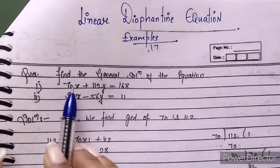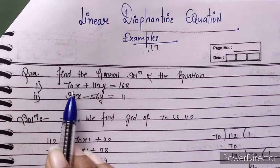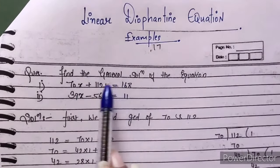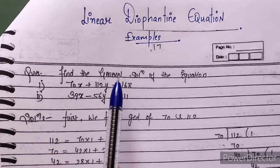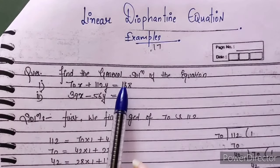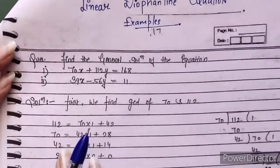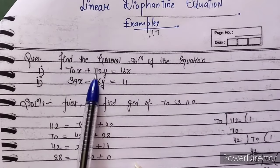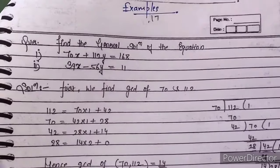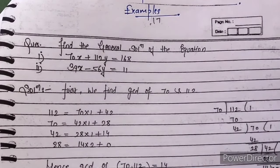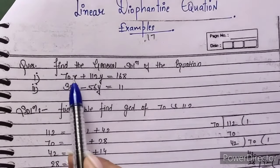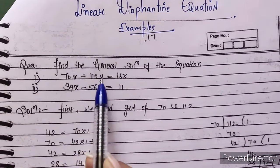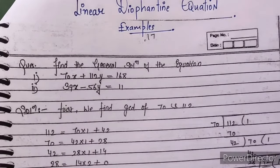We will now discuss how to find the general solution. First, find the general solution of the equation 70x plus 112y equals 168. The first step is to find the GCD of a and b. So here we want GCD of 70 and 112.